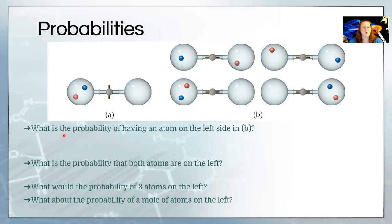The question: what is the probability of having an atom on the left side? So we look in here and we say one, two, three. Three options out of four have an atom on the left side. What is the probability that they're both on the left side? Well, that's just this one out of all four. So one out of four.